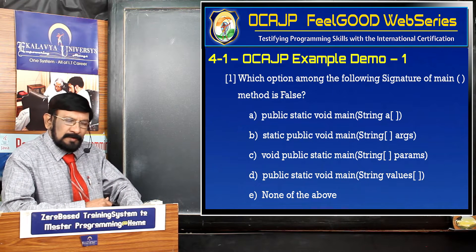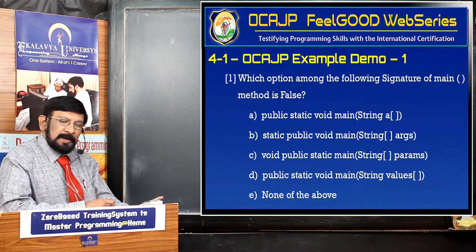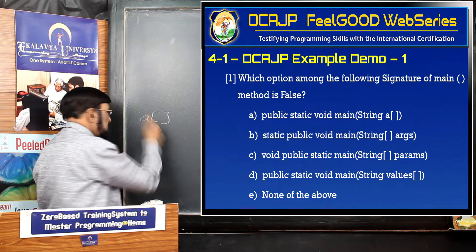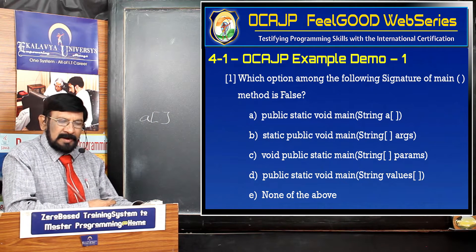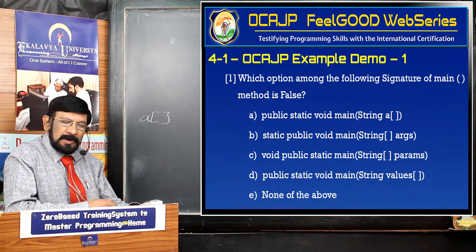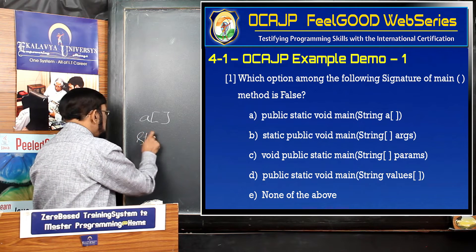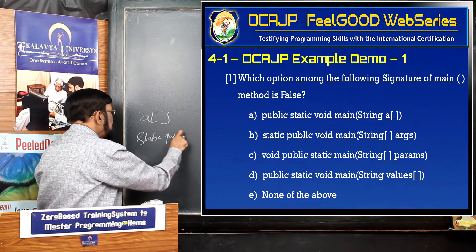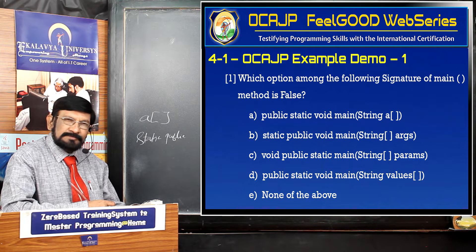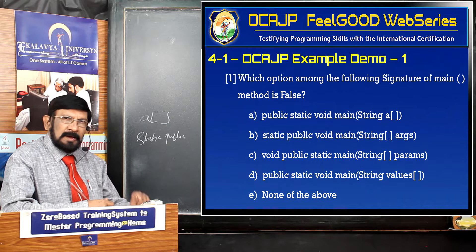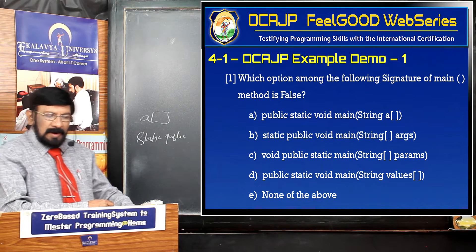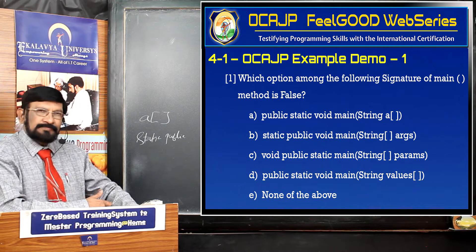Option A: public, static, void, main, String a[] — instead of 'args', a different identifier is used, and the square brackets are repositioned. Option B: static, public, void, main, String args — here static and public are interchanged. Option C: void, public, static, main, String params — void is placed first and the parameter is named 'params'. Option D: public, static, void, main, String values[] — the square brackets placement changes and the parameter is named 'values'.